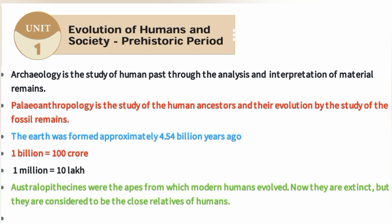Australopithecans were the apes from which modern humans evolved. Now they are extinct, but they are considered to be the close relatives of humans.